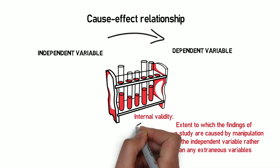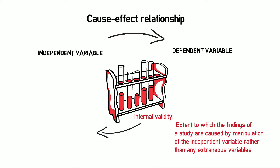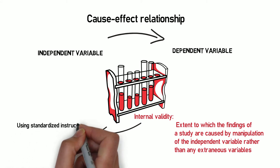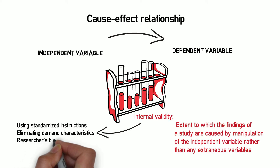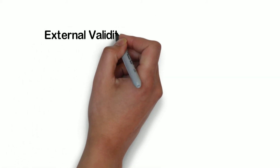A researcher can enhance internal validity by using standardized instructions, eliminating demand characteristics, or controlling investigator effects such as researcher bias. These are some of the ways a researcher can control extraneous variables and enhance internal validity.